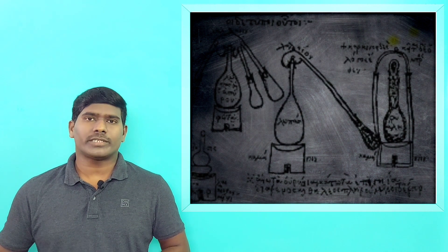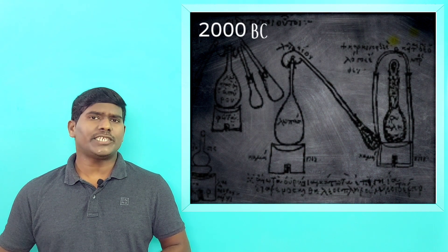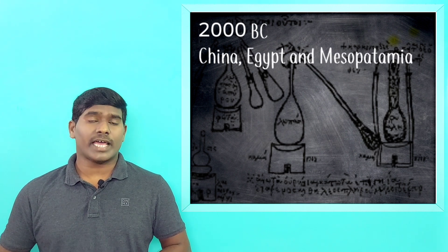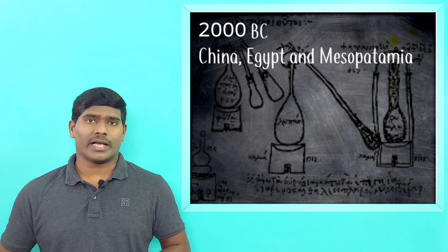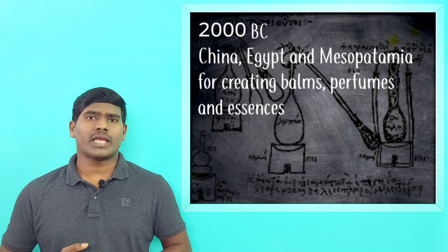Distillation is an age-old process dating back to 2000 BC. Some say distillation first occurred in China, Egypt and Mesopotamia for medicinal purposes, creating balms, perfumes and other essences.